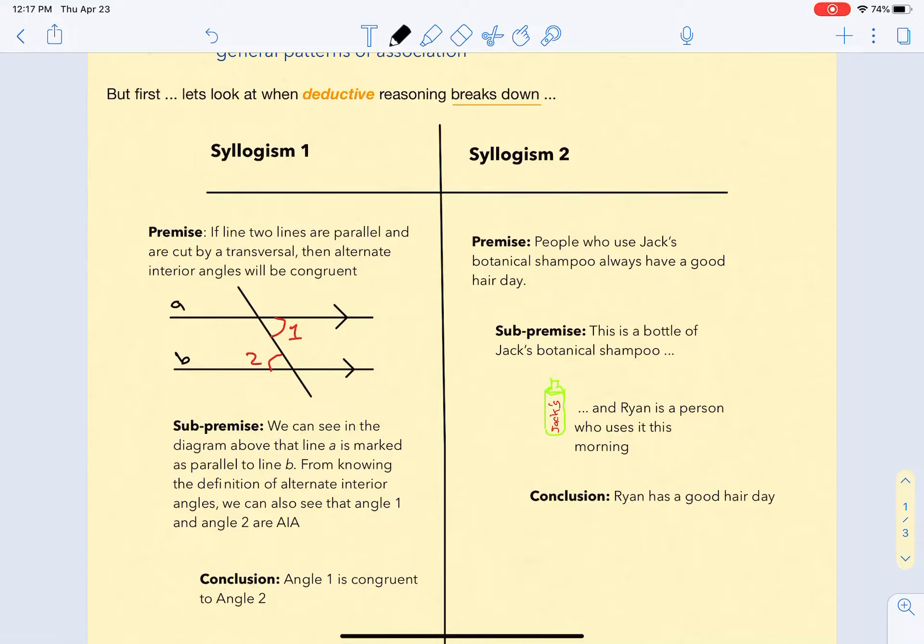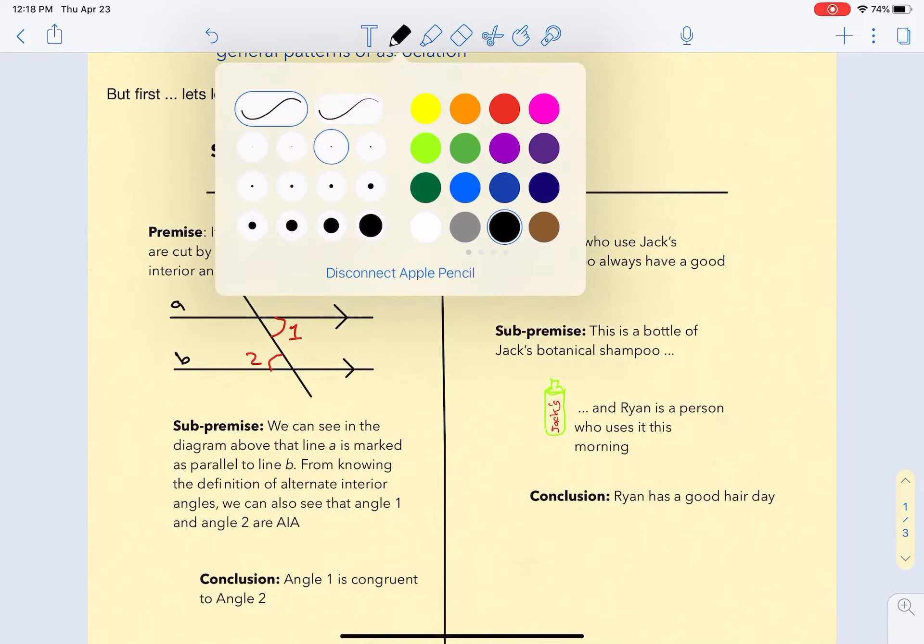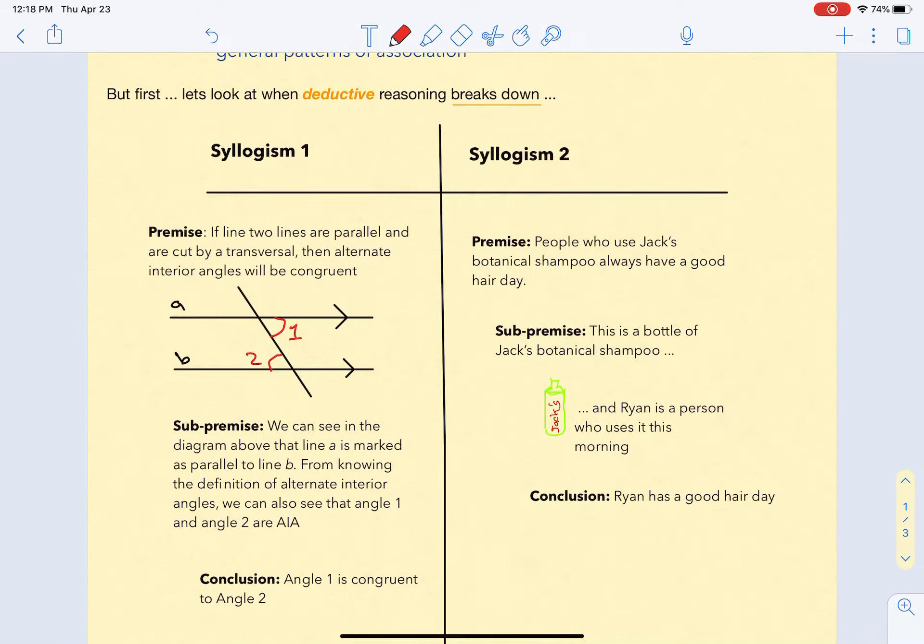We have two syllogisms - deductive reasoning patterns. The first one has a premise: if two lines are parallel and cut by a transversal, then alternate interior angles are congruent. The sub-premise says this is a situation where two lines are parallel and cut by a transversal. We know the definition of alternate interior angles, and since the premise and sub-premise are true, the conclusion has to be true. Angle 1 has to be congruent to Angle 2 no matter what.